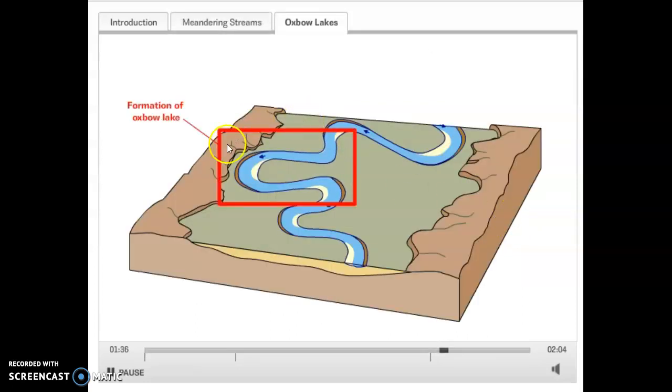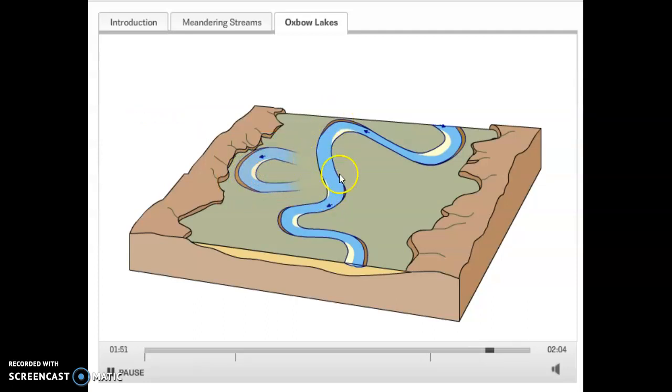So we're kind of zooming into the formation of that oxbow lake. Now here's your erosion happening, lateral erosion happening. And what's happening is that stream's moving along that big meander and that neck, it's going to cut that off to take a shorter, more straight path.